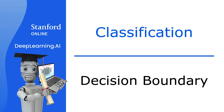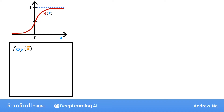In the last video, you learned about the logistic regression model. Now let's take a look at the decision boundary to get a better sense of how logistic regression is computing its predictions. To recap, here's how the logistic regression model's outputs are computed in two steps.